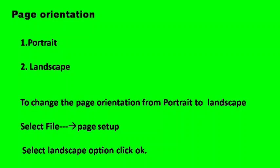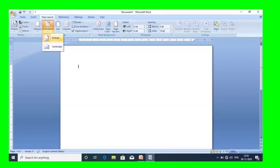The second page formatting option is page orientation. There are two types: portrait and landscape. In portrait, the length of the page is more than the width — this is the default page setup. In landscape, the width of the page is more than the length. To change the page orientation from portrait to landscape, select File, go to Page Setup, select the landscape option, and click OK.